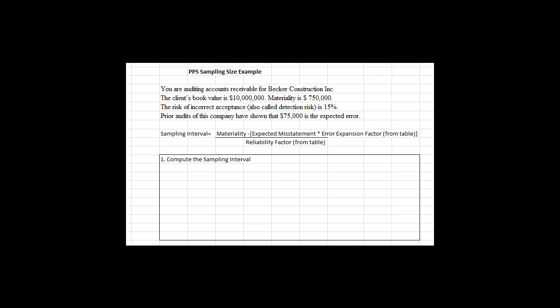Now let's look at the sampling interval computation. We start with the auditor's specification of materiality — that's $750,000. The auditors have also specified in the audit program what the expected misstatement is. But now we have these two table factors. First, let's see what the top half of this equation is computing. We're taking materiality and we're reducing it.